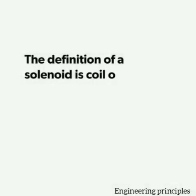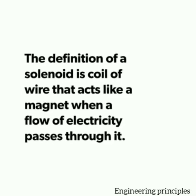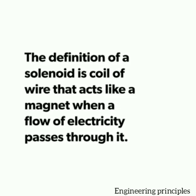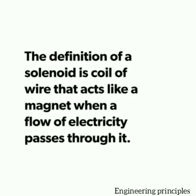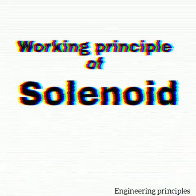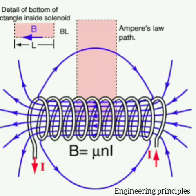The definition of a solenoid is a coil of wire that acts like a magnet when a flow of electricity passes through it. Working Principle of Solenoid: The solenoid simply works on the principle of electromagnetism. When the current flows through the coil, a magnetic field is generated in it. If you place a metal core inside the coil, the magnetic lines of flux are concentrated on the core, which increases the induction of the coil as compared to the air core.